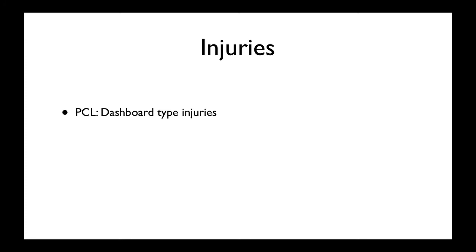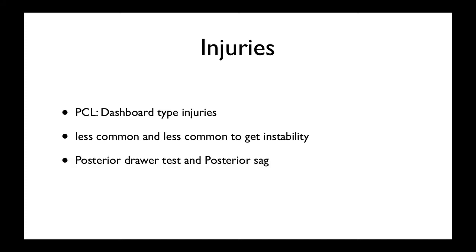PCL injuries are less common and typically involve a dashboard-type mechanism, where the patient's knee is flexed and the dashboard is rammed into the tibia, causing it to move backwards and rupturing the PCL. It's less common to get instability because the knee capsule provides more stability. The posterior draw test is essentially the same — with the knee flexed you push the tibia backwards. The posterior sag sign involves placing both feet together with knees flexed to 90 degrees; if one tibia sags backwards, the PCL is ruptured.